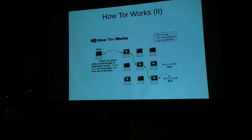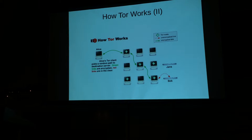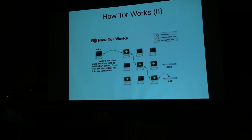Every connection between any two communicants on the Tor network is encrypted, except for the very last node — the exit node — which reaches out to the internet to grab whatever you want. Every receiver of a packet knows who they got the packet from, and once they unwrap it can tell who they're supposed to send the data to, but they don't know who the hop before was and don't know who the hop after is. No one can really correlate the input of this overlay network with the output.